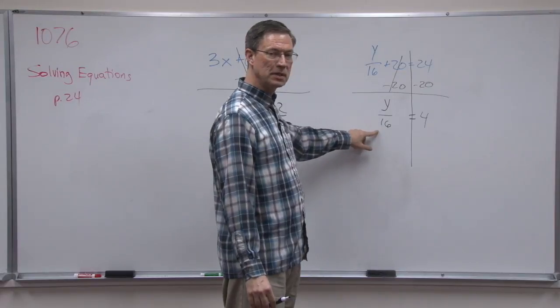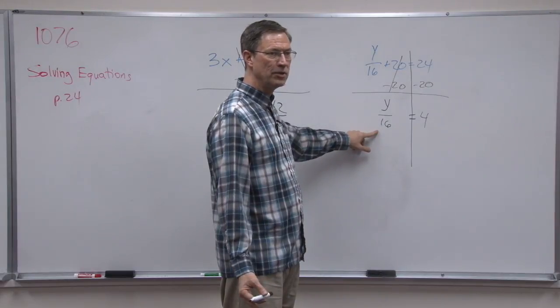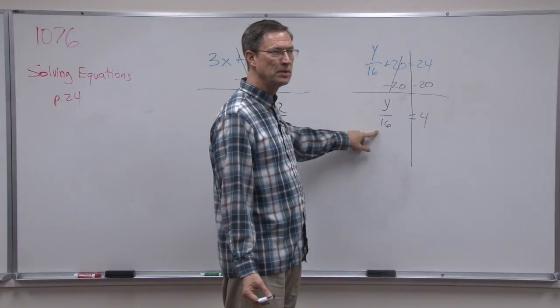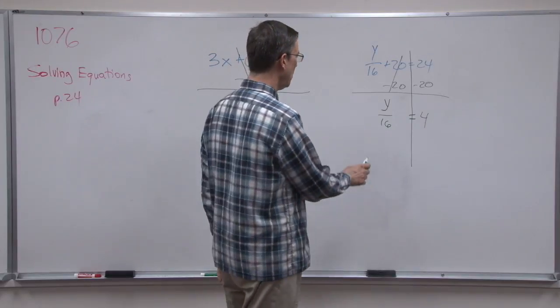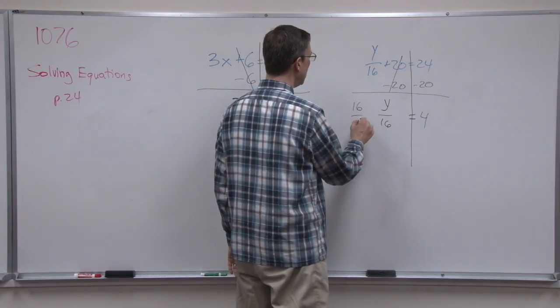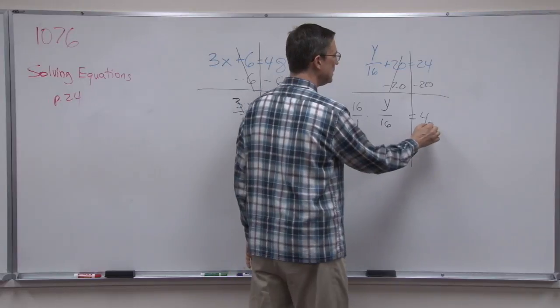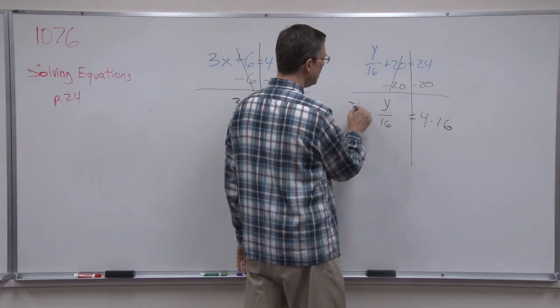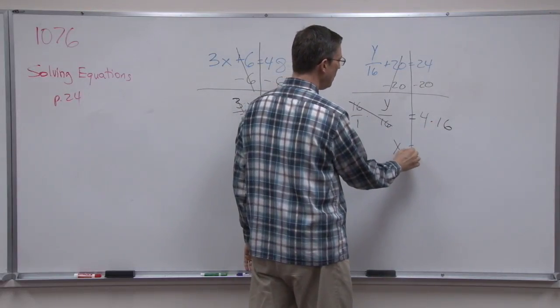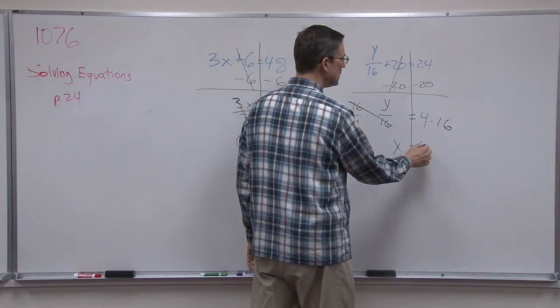This is y divided by 16. So without even thinking, I just have to say, all right, the opposite of dividing is multiplying. And if I multiply both sides by 16, then that will cancel, and y will equal 64.